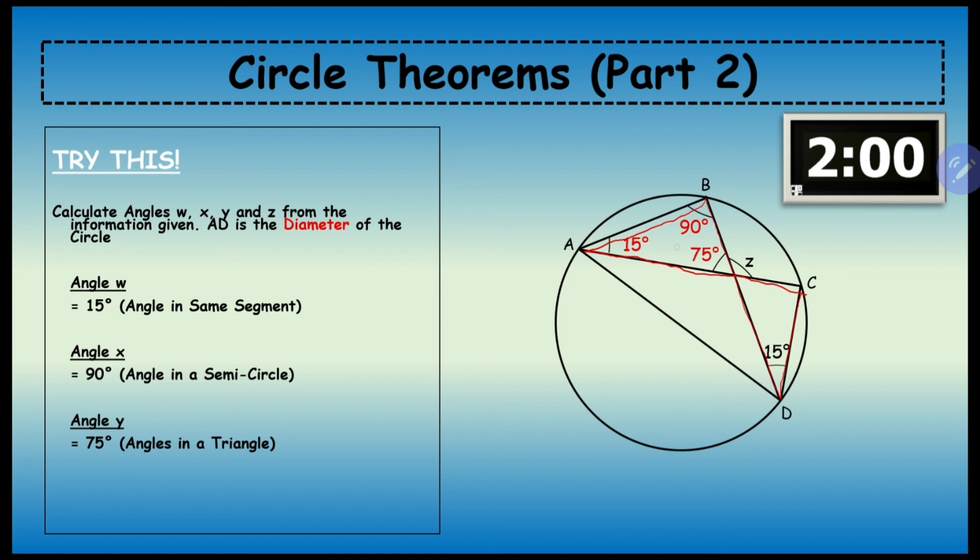Once you've got angle y is 75°, y and z equal 180° because they are both on a straight line. So z is going to be 105°.